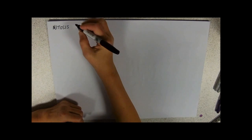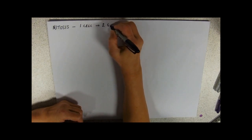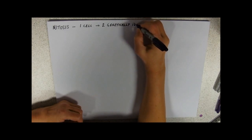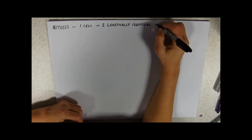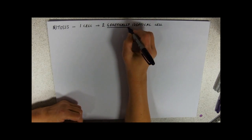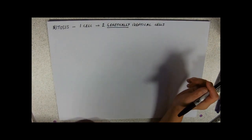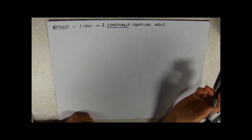Mitosis is a way of making one cell into two genetically identical cells, and there are some key processes that help that to happen. When you're talking about mitosis, you always need to be talking about genetically identical. Be really specific about that. It is genetically identical.